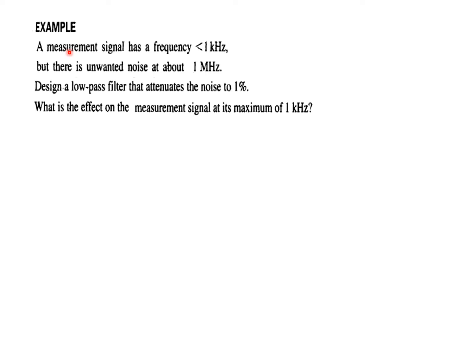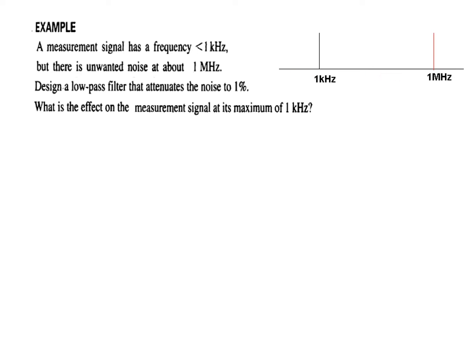Here is a design problem: a measurement signal has a frequency of less than 1 kHz, but there is unwanted noise at about 1 MHz. As shown in the diagram, the actual signal is at 1 kHz and below, while the noise is at 1 MHz. We need to design a low-pass filter that allows the low-frequency signal to pass but blocks the high-frequency noise.